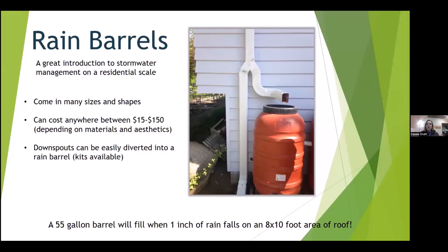Rain barrels are a great introduction to stormwater management — in the industry we jokingly call it the gateway drug to stormwater management. Once someone puts in a rain barrel, they often start looking at rain gardens or soil quality restoration. Rain barrels come in many sizes, from 15 to over 150 gallons, depending on where you get them. You can buy one from a reputable company or make your own.